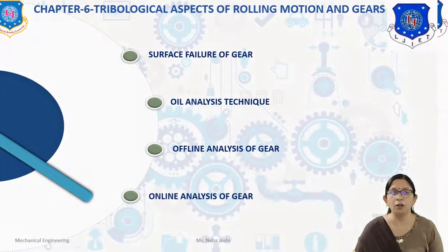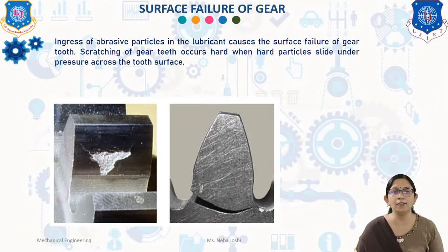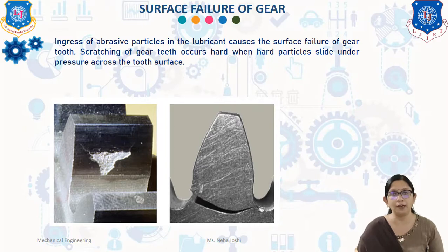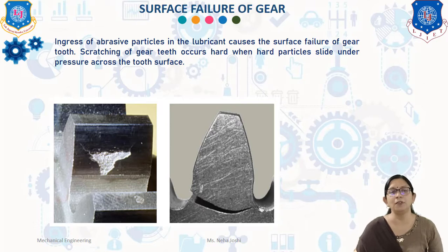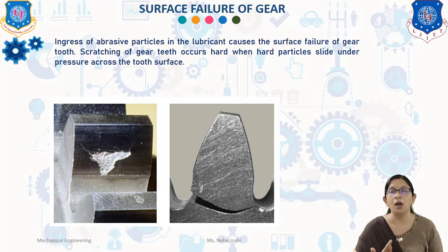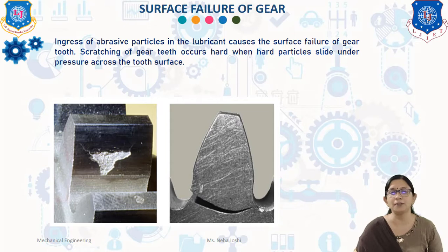First we will discuss gear surface failure. Gear failure can be grouped into plastic flow failure, breakage of gear tooth, and surface failure. A failure due to plastic flow occurs due to excessive yielding of gear tooth under heavy loads. Breakage of gear tooth is defined as a fracture of a substantial portion of the tooth.